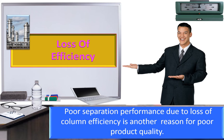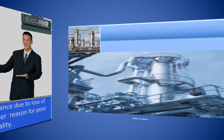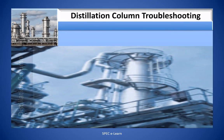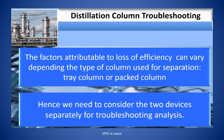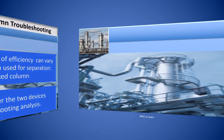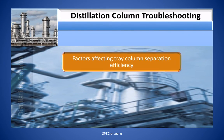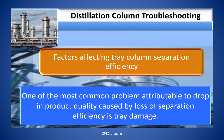Loss of efficiency. Poor separation performance due to loss of column efficiency is another reason for poor product quality. The factors attributable to loss of efficiency vary depending on the type of column used — tray column or packed column — and so we need to consider these two types separately for troubleshooting analysis. One of the most common problems attributable to dropping product quality caused by loss of separation efficiency is tray damage.